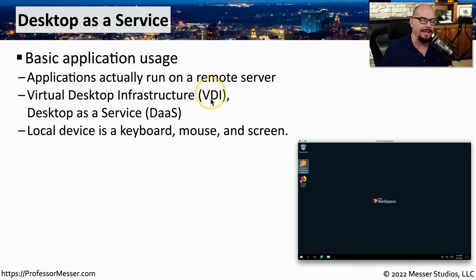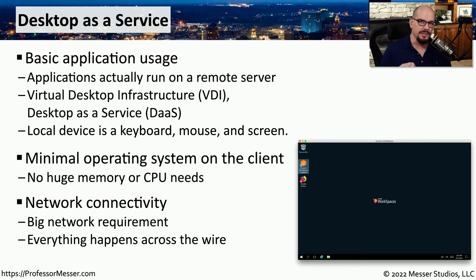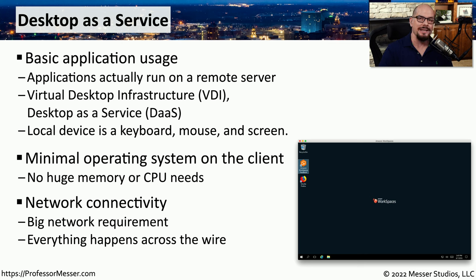This means all you really need is a mouse, a keyboard, and a screen, and you will have access to your desktop from anywhere in the world. Most of what you'll see on the tablet used to access this Windows desktop is a screen share — you're effectively getting a remote desktop view of that Windows environment. The network connection will be incredibly important if you're using desktop as a service because everything is happening across the network. Fortunately, this uses remote desktop technology to send a minimal amount of information between the client and the desktop, but you still need that network connection.